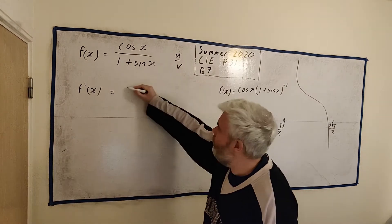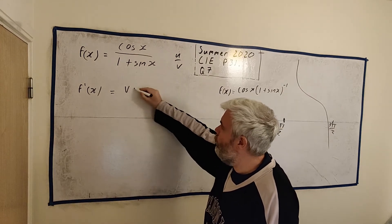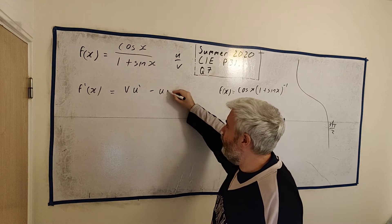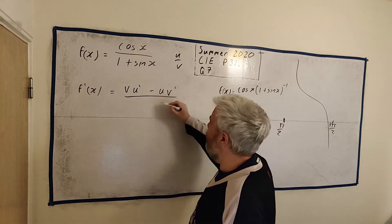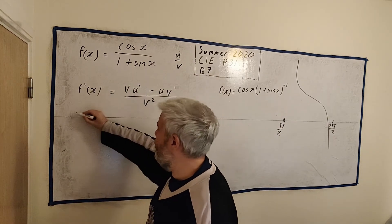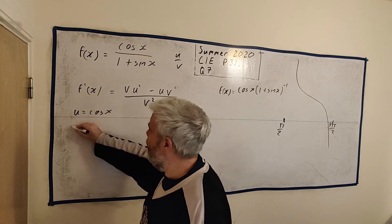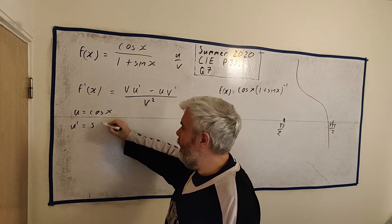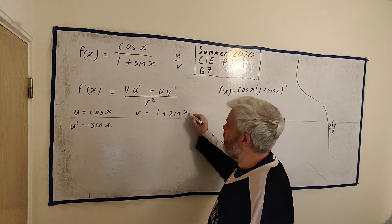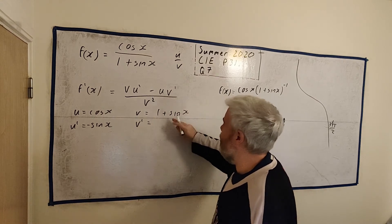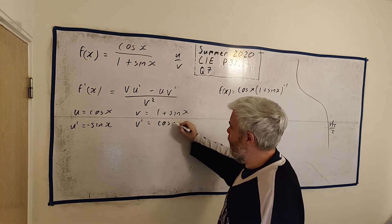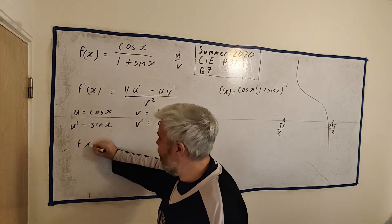I'll write out the formula for it. You first take v left alone, multiplied by the derivative of u, and then take away u left alone, multiplied by the derivative of v, all divided by v squared. And to make this a little easier, let's just write them out separately here. u is equal to cos(x). The derivative of u would be -sin(x). And then v was equal to 1 + sin(x). And the derivative of v is equal to, the derivative of 1 is 0, and the derivative of sin(x) is cos(x).